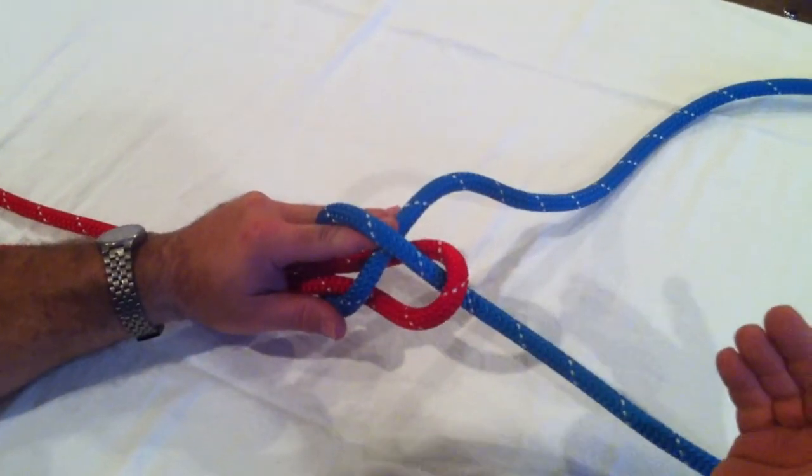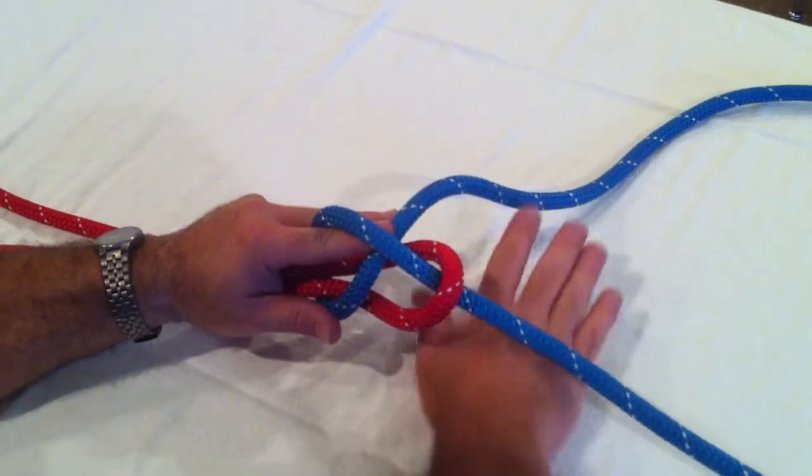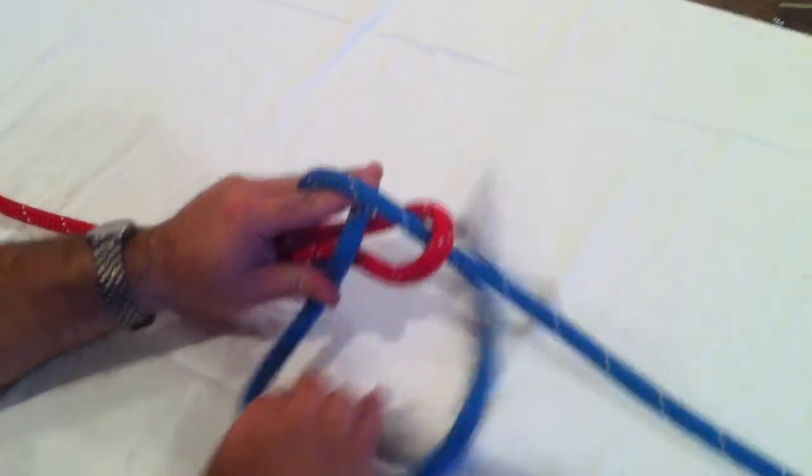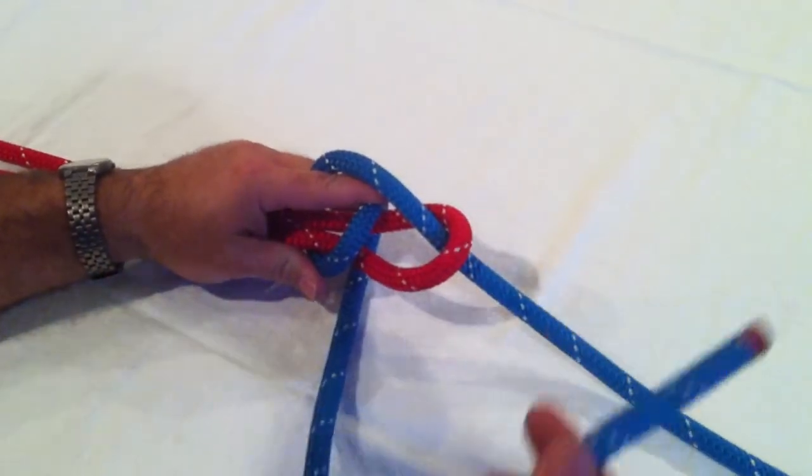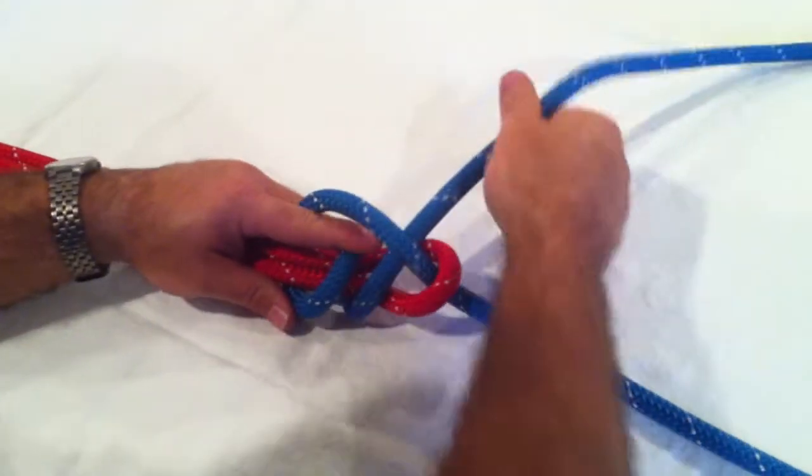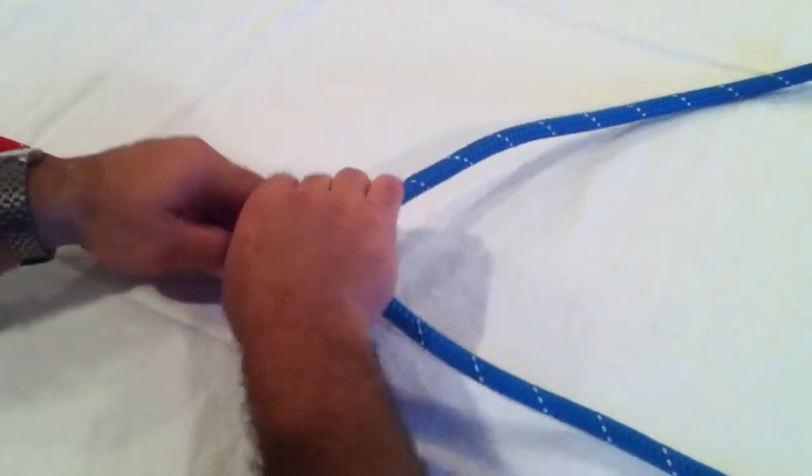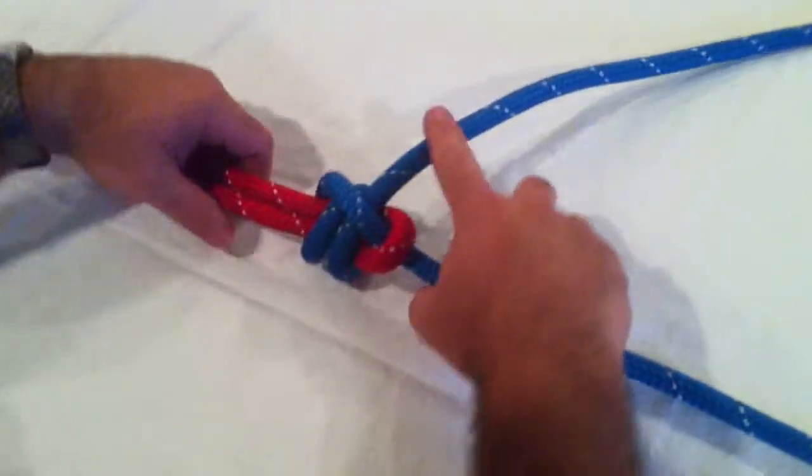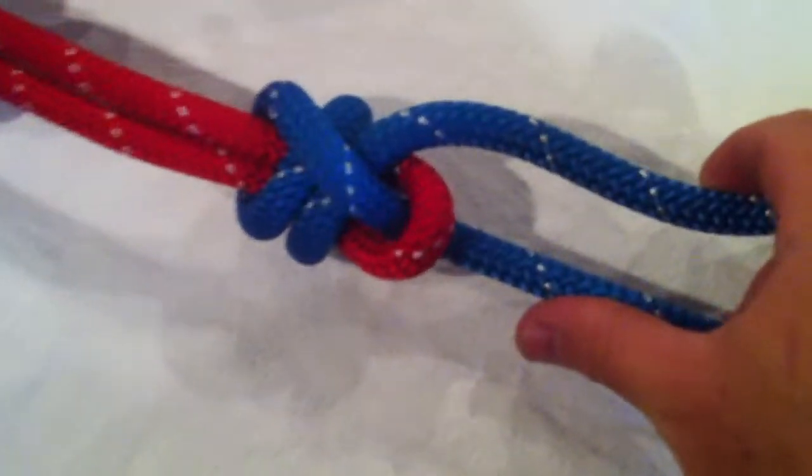If we wanted the normal sheet bend, we'd stop here, go ahead and pull it and then that would be the sheet bend. Since we're doing the high strength sheet, we're going to do one more wrap. So we're going to bring it around the back again and stick it up through there one more time. Then we're going to go ahead and tighten these down. That should be the final appearance of the high strength sheet bend.